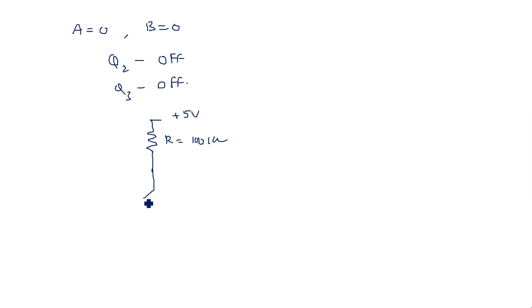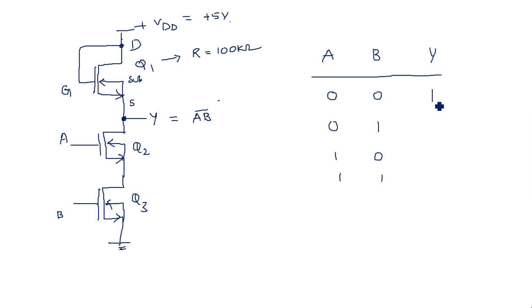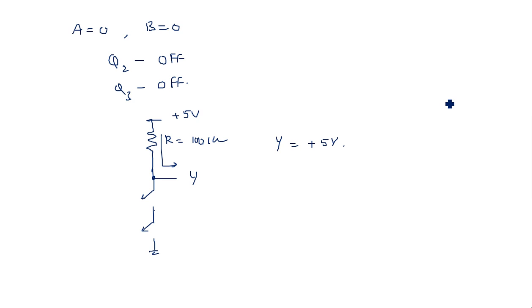When Q2 and Q3 are both OFF, the circuit has only the pull-up resistor of 100 kilo ohms connected to plus 5 volts, and the remaining two transistors are open-circuited. So current flows directly to the output Y, making Y equal to plus 5 volts, which we take as logic 1.